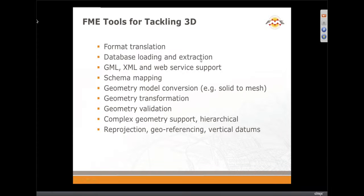In terms of tools that we have for supporting 3D work, format translation is certainly one way to get started. There are a lot of other tools that FME offers. Loading databases and extracting from them is a key use for FME — CityGML may be a key transport mechanism for that. Schema mapping is key: if you're going from IFC to CityGML, the schema mapping tools we have can certainly help automate that process for transforming the data model.